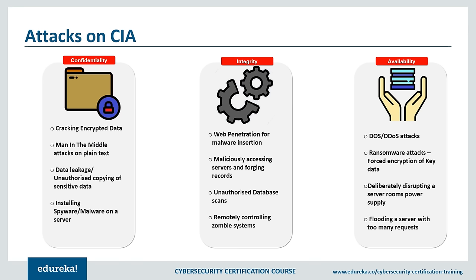Last but not least is availability. Availability is best ensured by rigorously maintaining all hardware, performing repairs immediately when needed, and maintaining a correctly functional operating system environment free of software conflicts. It's also important to keep current with all necessary system upgrades. Providing adequate communication bandwidth and preventing bottlenecks are equally important. Redundancy, failover, and high availability clusters can mitigate serious consequences when hardware issues occur. A comprehensive disaster recovery plan must include unpredictable events such as natural disasters and fire. A backup copy must be stored in a geographically isolated, perhaps fireproof and water-safe, location. Firewalls and proxy servers can guard against downtimes and denial of service attacks.